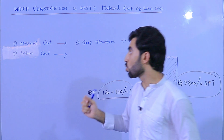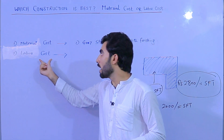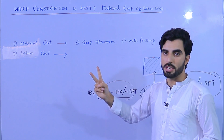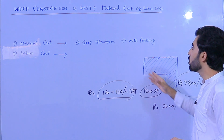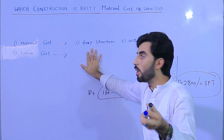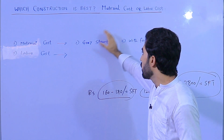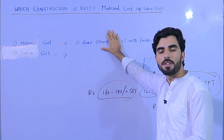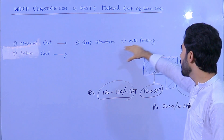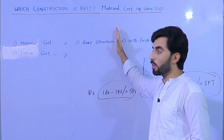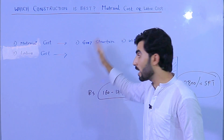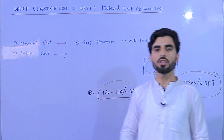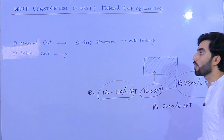Remember, if your budget is low and you want to do construction on a long-term policy, labor cost is best for you. In material cost, you do the construction in one or two terms — either gray structure or with finishing. For gray structure, they take about 1100 to 1500 per square feet. It depends on your budget and whether you want a long-term or short-term policy — you can decide which one is best for you.